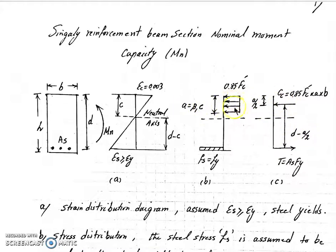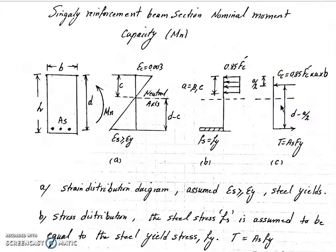We have this value multiplied by the area, which is a multiplied by b, so that's why we get our Cc. In order to find the Mn, we use the equilibrium condition in this area, so that means that T is equal to Cc.